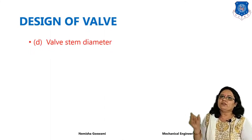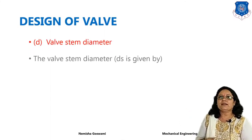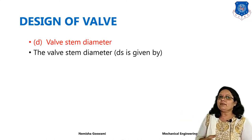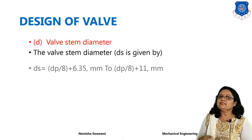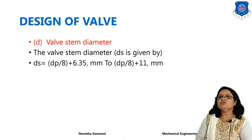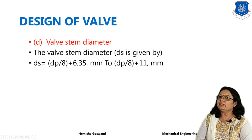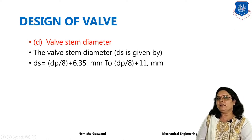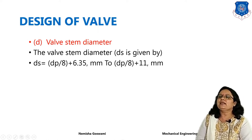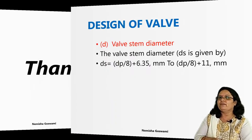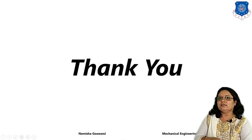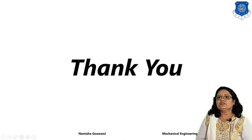Next, you have to find out the valve stem diameter. The valve stem diameter Ds varies generally from Dp divided by 8 plus 6.35 to Dp divided by 8 plus 11. Thank you. Keep watching.